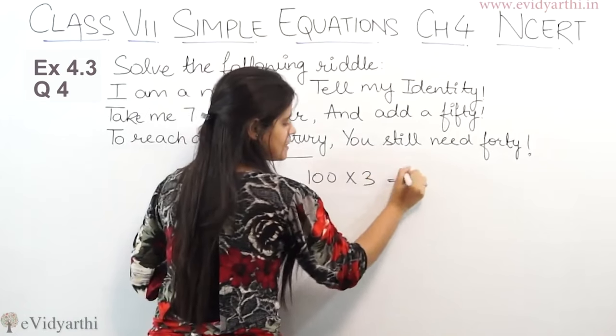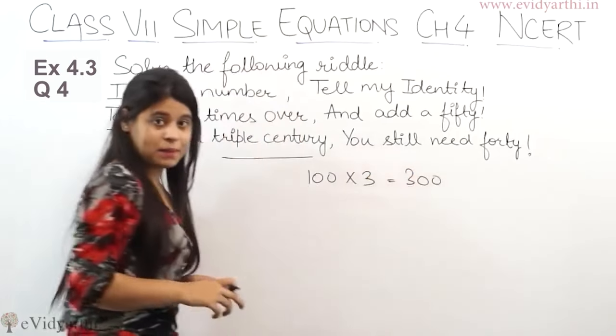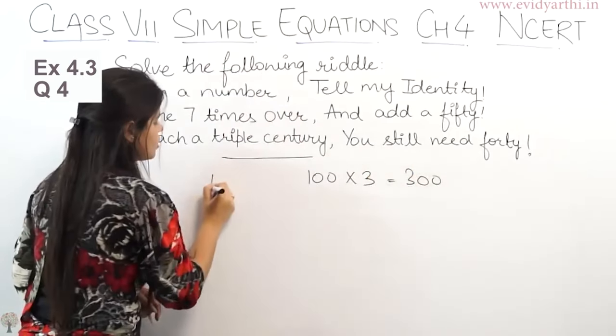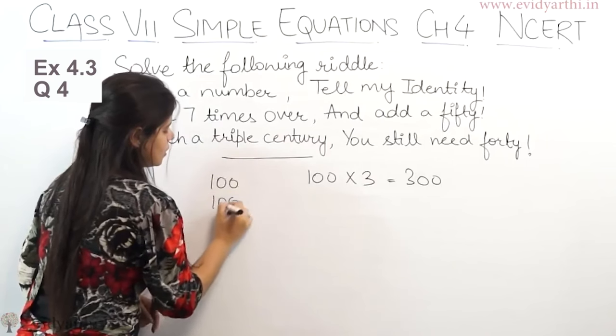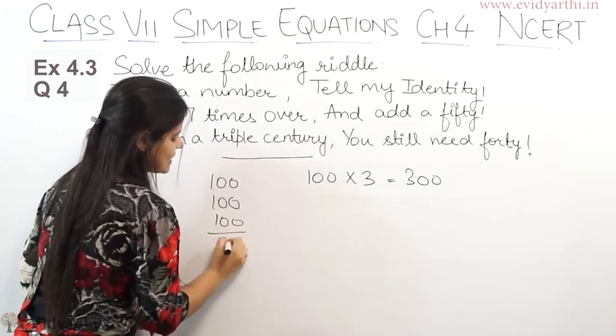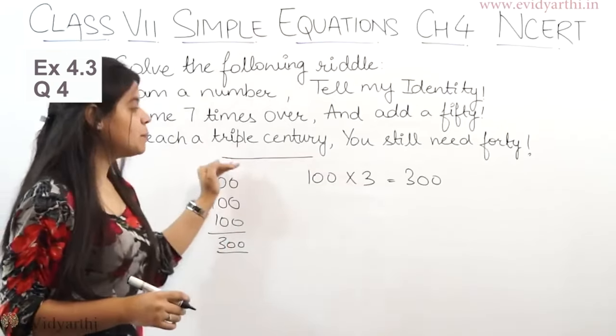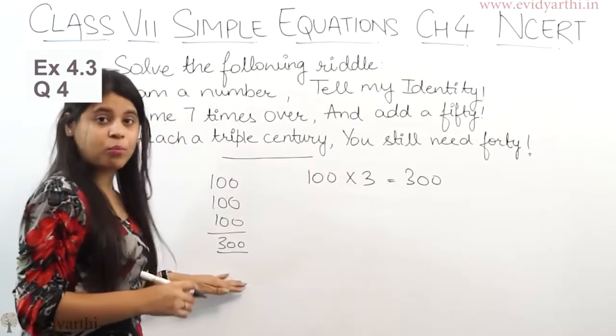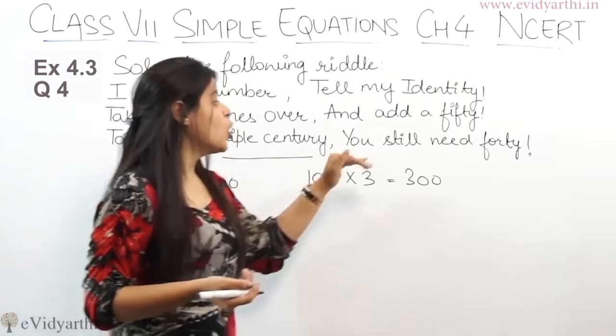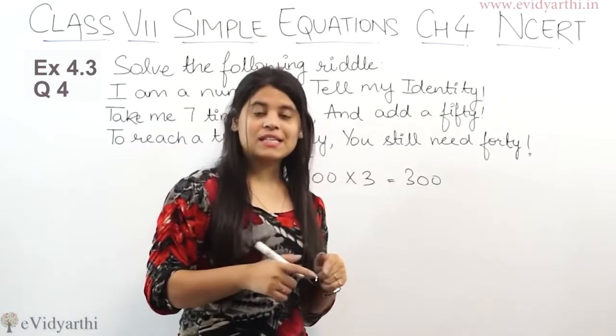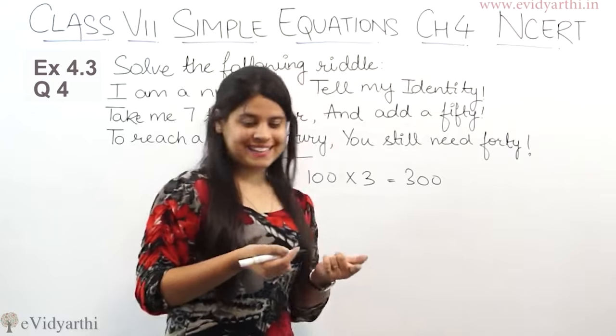So you can do it like this. You will multiply it like this, and the triple century means 3 times by century. 3 times by century is 300. So to reach a triple century, now 300 if you want to equal it, you still need 40. Means you need 40 and add to it.